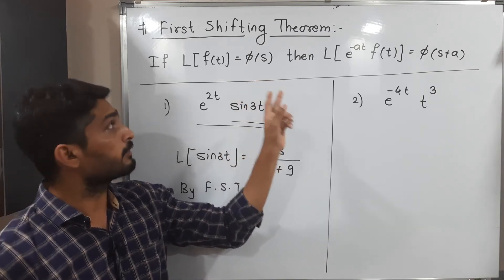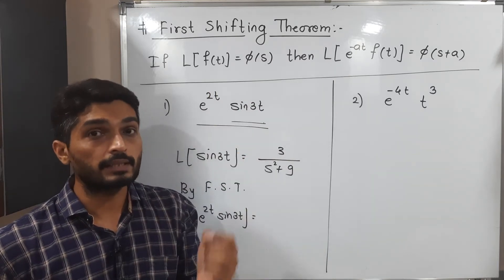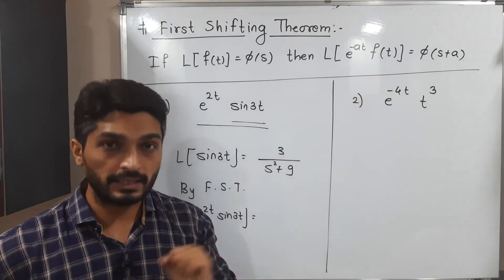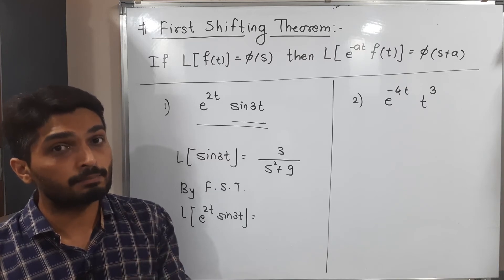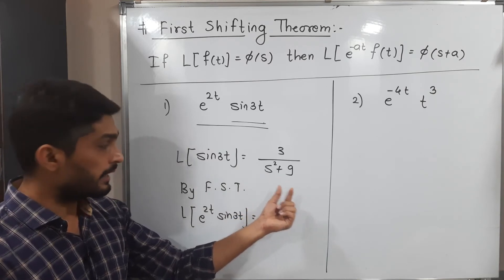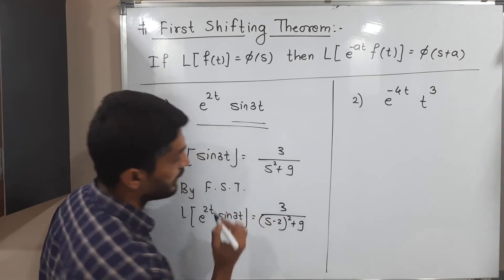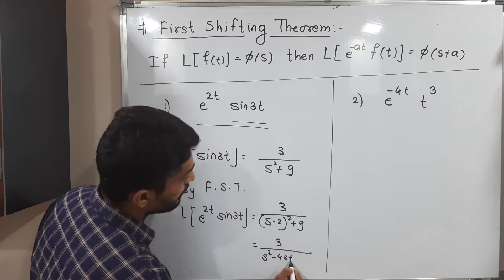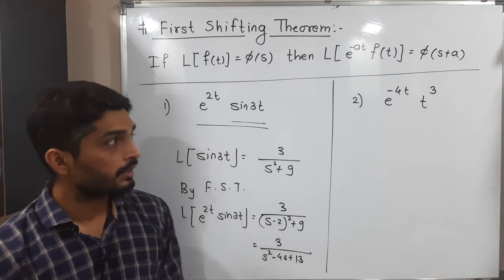The First Shifting Theorem says: if you already have the Laplace of f(t), and e raised to minus at is a multiple of it, replace s by s + a. The corollary says if you have e raised to plus at, replace s by s − a. Here we have e raised to 2t — positive sign — so we replace s by s − 2 everywhere. Laplace of sin(3t) is 3/(s² + 9), so replacing s by s − 2 gives 3/((s−2)² + 9), which equals 3/(s² − 4s + 4 + 9) = 3/(s² − 4s + 13). This is the required Laplace transform.